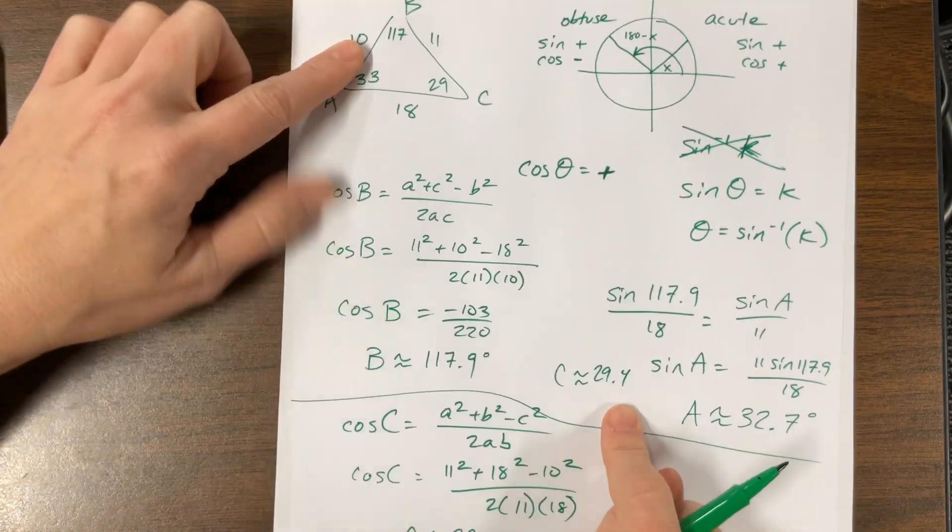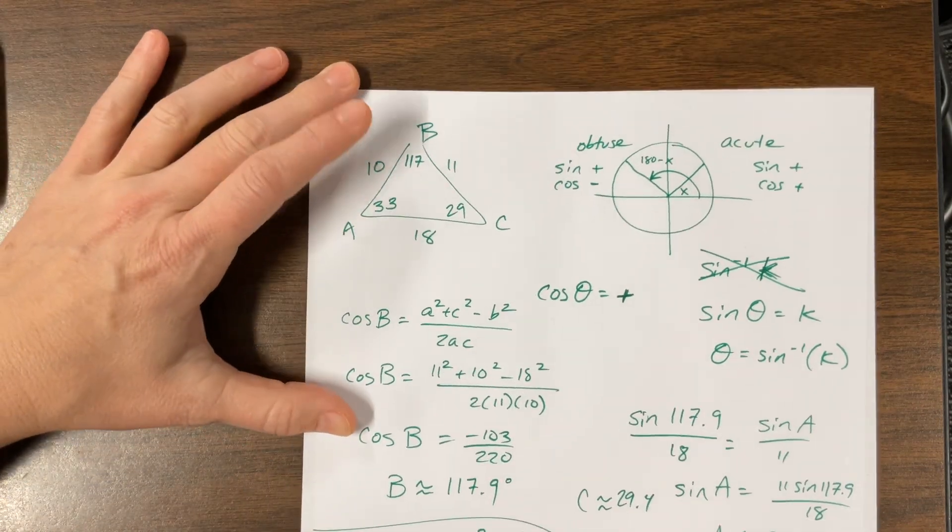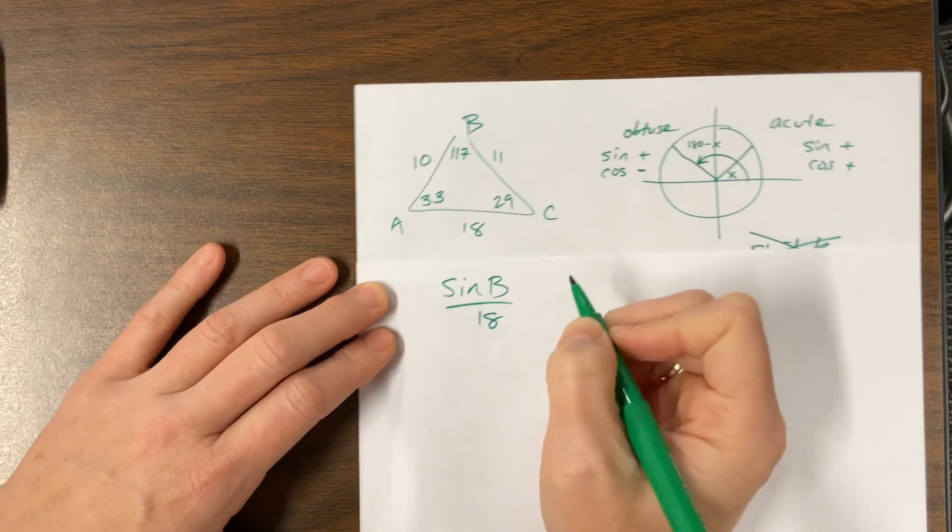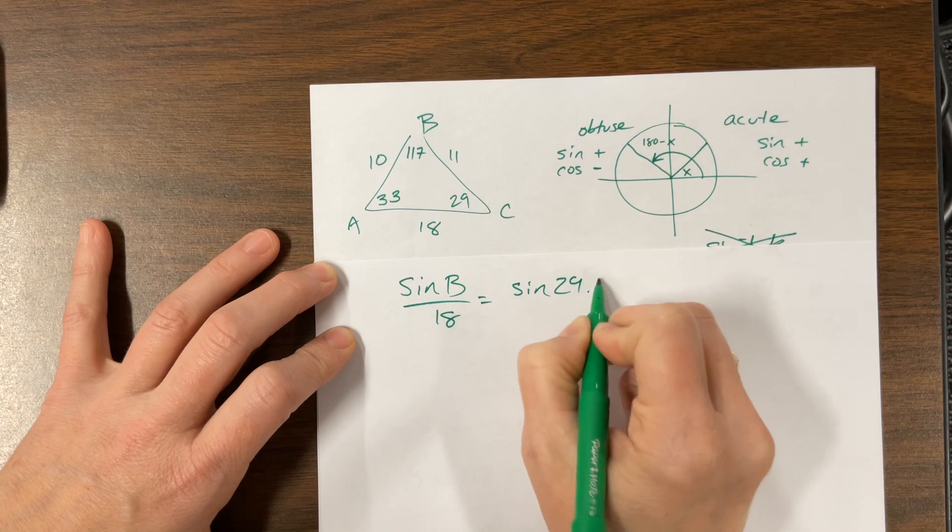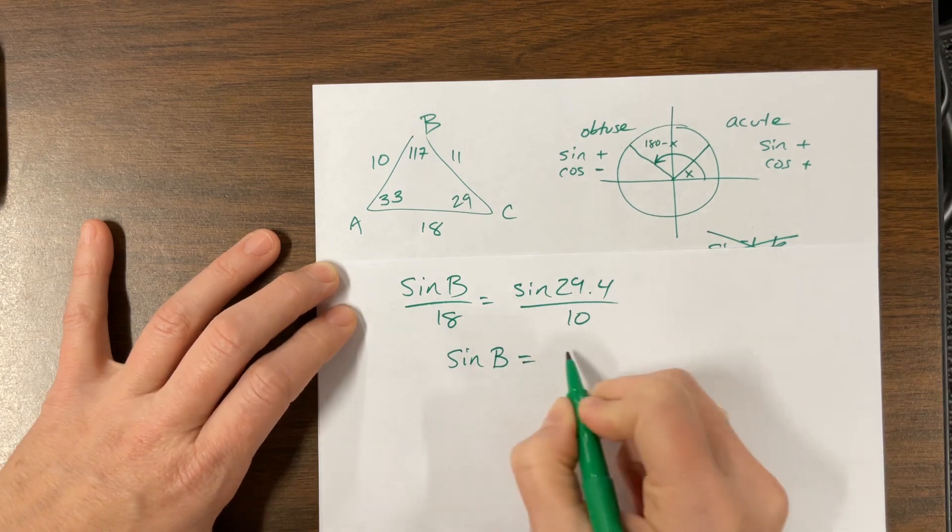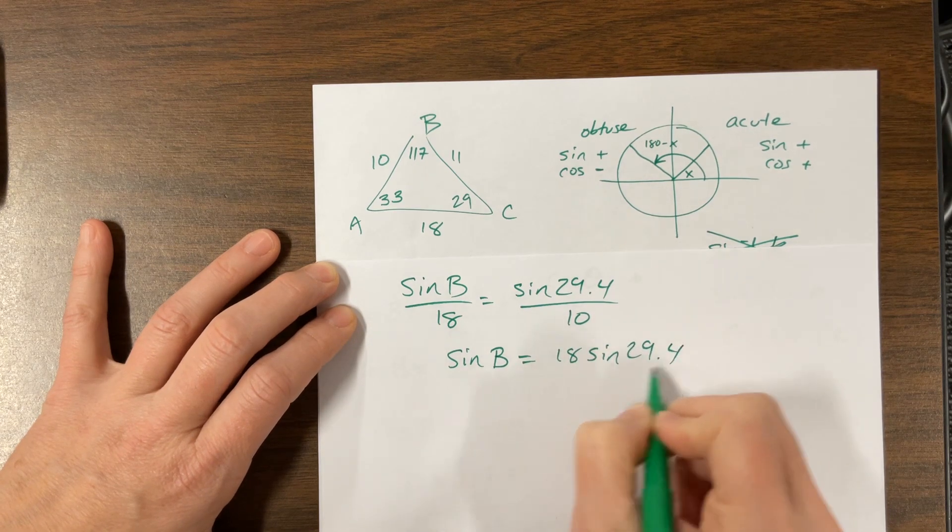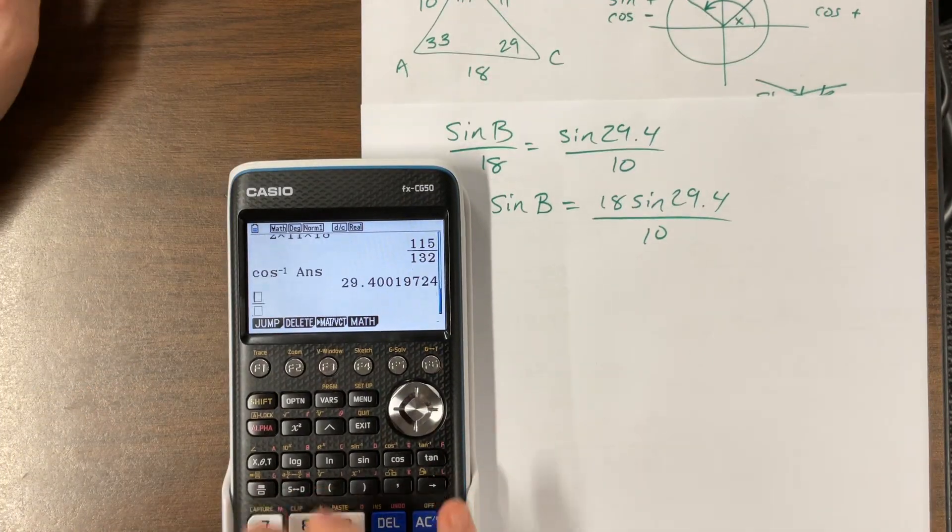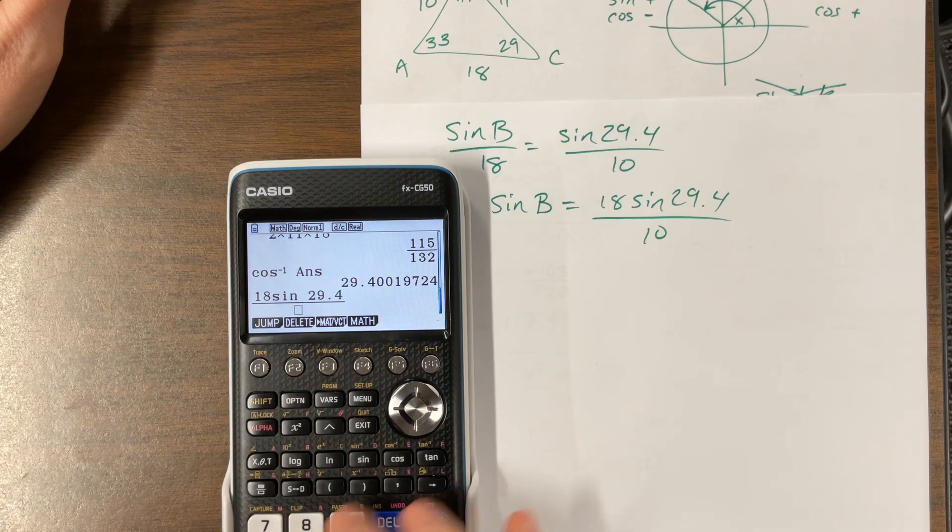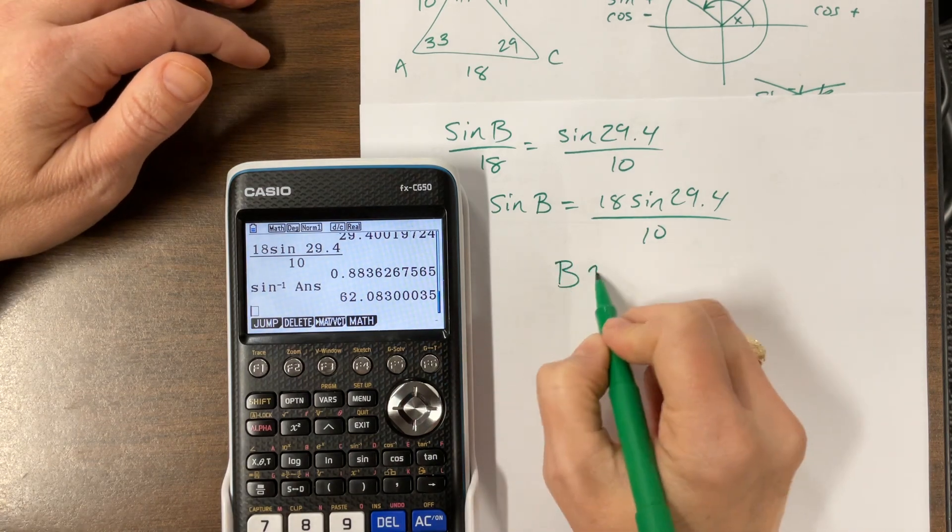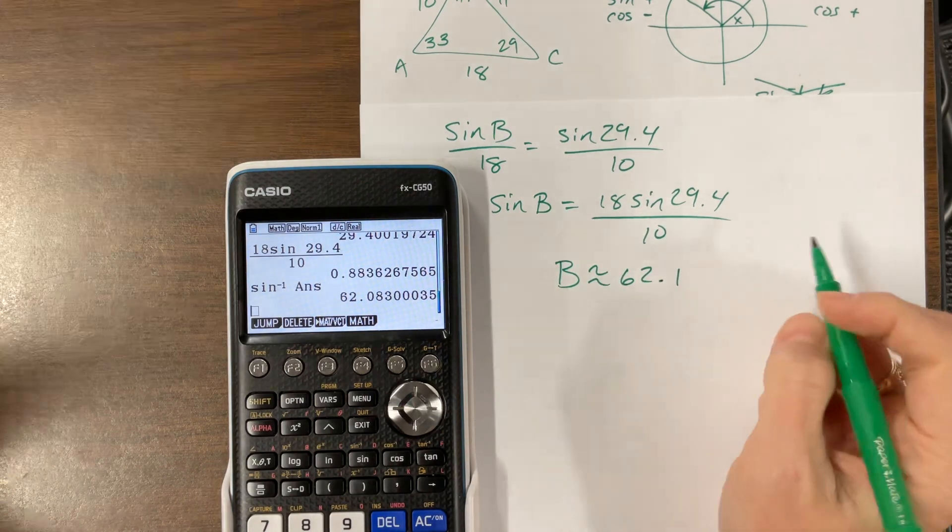But now, if I try and do the law of sine to find B, what I would know is that sine of B over 18 is equal to sine of 29.4, that's my C angle, over 10. Okay, so sine of B is equal to 18 sine of 29.4 over 10. Well, grab a calculator. 18 sine of 29.4 over 10, inverse sine of the answer. And I get that B is about 62.1-ish.